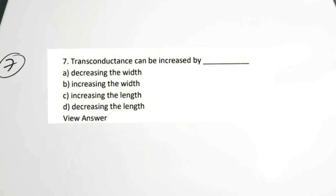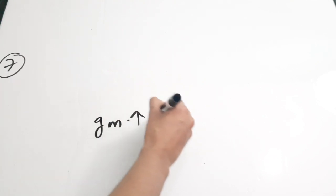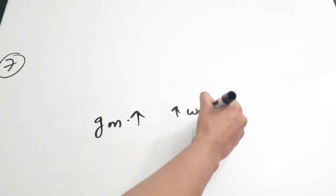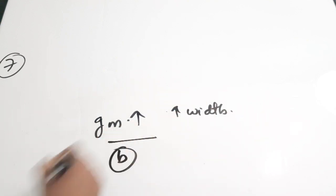Transconductance is increased by dash. Options: A - Decreasing the width, B - Increasing the width, C - Increasing the length, D - Decreasing the length. Transconductance of the MOS device, that is GM, is increased by increasing the width. It does not depend on the length; it is only depending on the width. You can increase GM or transconductance by increasing the width. Correct answer is option B.